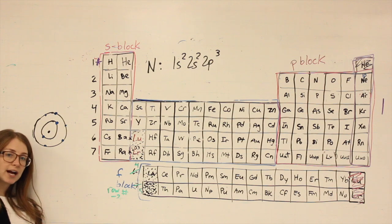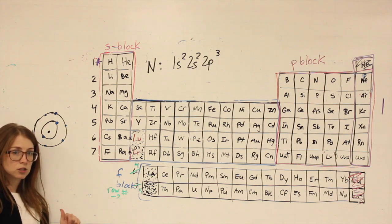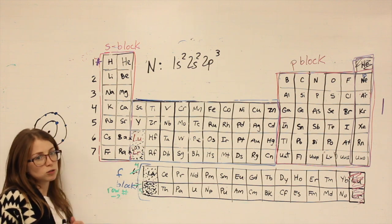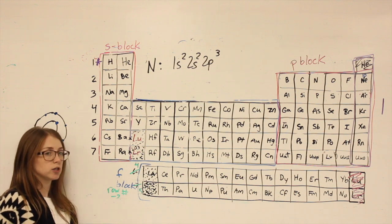We call that the valence shell. Nitrogen has five valence electrons. What it wants is to be stable. It wants to have a full outermost shell, and it can do that by either gaining or losing electrons.